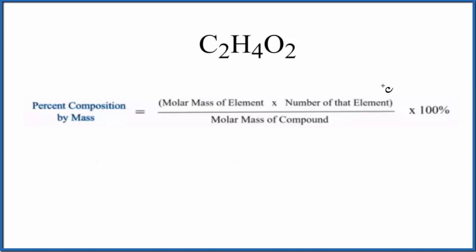By mass for each element in acetic acid, we'll use this formula here. The first thing we need to figure out is the molar mass of the compound, of the acetic acid. When we do that, this is what we get. So our molar mass is 60.05, and the units are grams per mole. So we have this information.